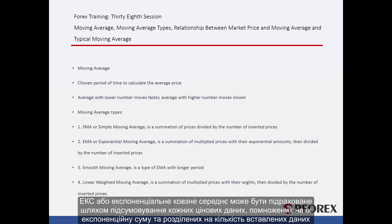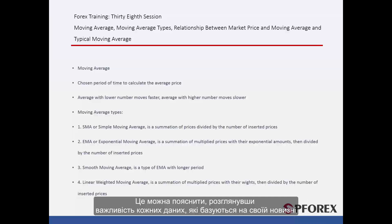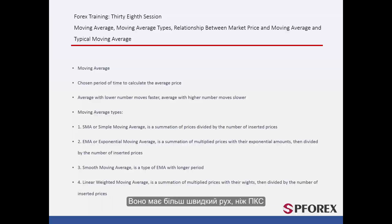EMA, or Exponential Moving Average, can be calculated by the summation of each price data multiplied by its exponential amount and divided by the number of data inserted. It classifies data by considering the importance of each based on its novelty — the latest data has more significant effect on the market. It has more rapid movement than the SMA.